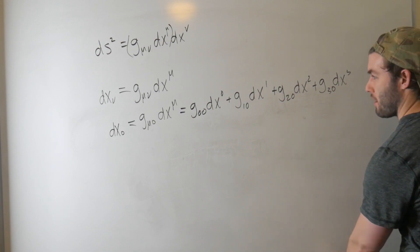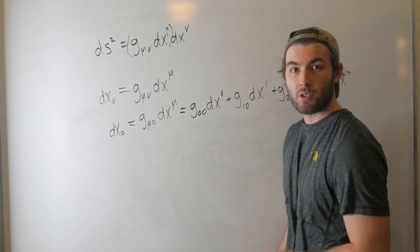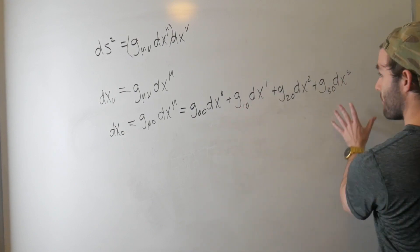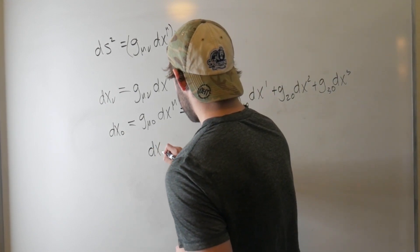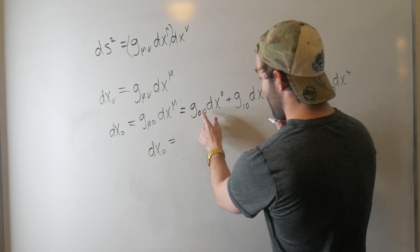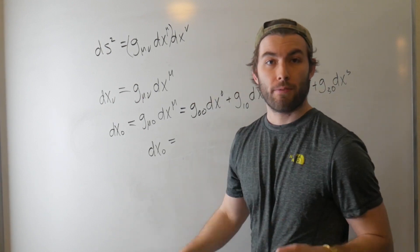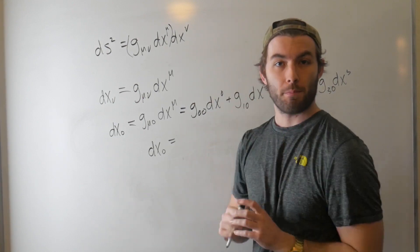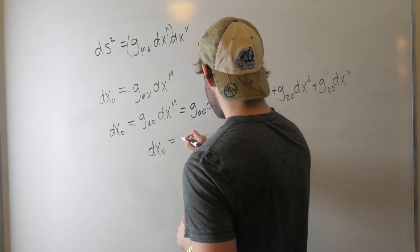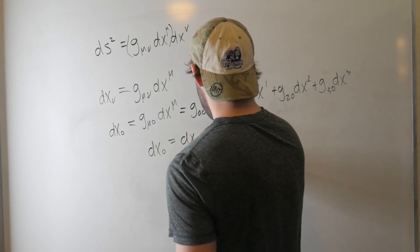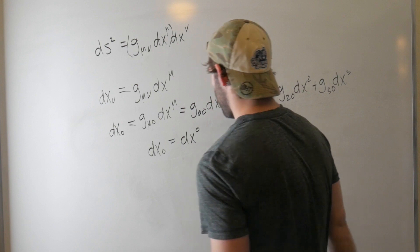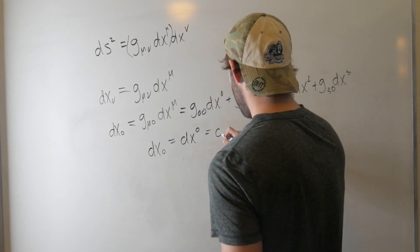Well, we already know that with the Minkowski metric, the off-diagonal terms are zero. So all of these terms are zero and we get that dx_0 is equal to g_00, which for the Minkowski metric, remember the first component is just one. So we get that this is equal to dx^0 with the superscript. So this is equal to c t.